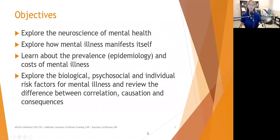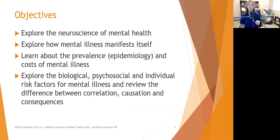In this presentation, we're going to explore the neuroscience of mental health and how mental illness manifests itself. We'll learn about the prevalence, epidemiology, and costs of mental illness. We'll explore the biological, psychosocial, and individual risk factors for mental illness and review the differences between correlation and causation in order to determine consequences.